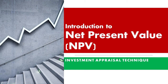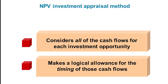NPV investment appraisal methods consider all of the cash flows for each investment opportunity and make a logical allowance for the timing of those cash flows. Let's say I invest 1 million in a project now and then I get 1.5 million over the life of the project, which is five years. Which one is better — 1 million now or 1.5 million spread over five years, receiving some in year one, year two, year three, year four, and year five? NPV can actually tell us which one is better.